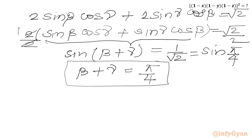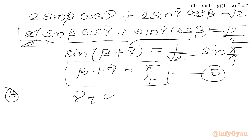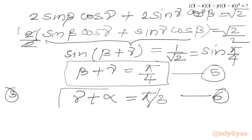In the same way, if we consider our third equation and solve it similarly, we get γ + α equal to π/3. This is our equation number 6.